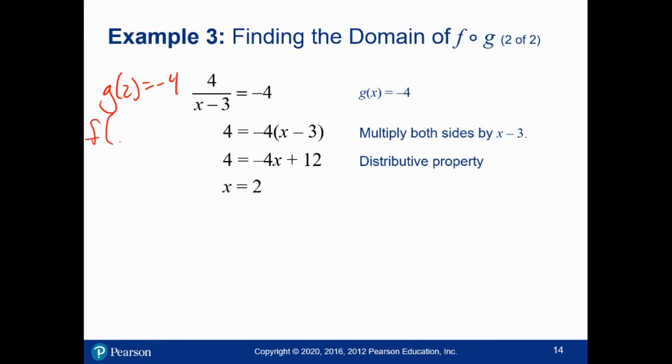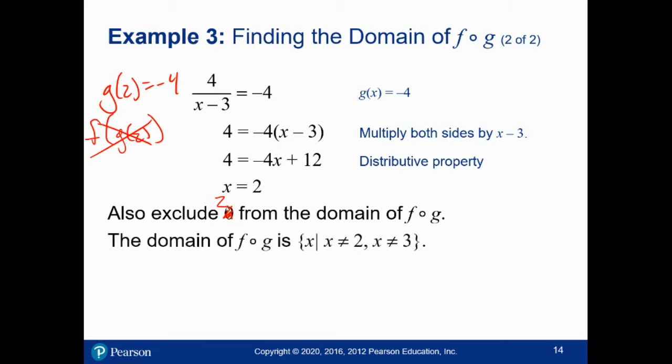While I can plug 2 into g, I can't take the output of g and plug it into f. Not 0, 2. So 2 is also prohibited from the domain. So the domain of f∘g is everything except for 2 and 3. 3 was prohibited because it wasn't in the domain of g, and 2 is prohibited because what g spits out is not in the domain of f.